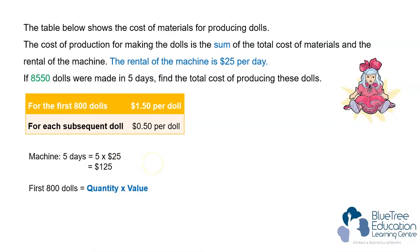The cost of producing the first 800 dolls will make use of the concept of quantity times value. 800 multiplied by $1.50 is equal to $1,200.